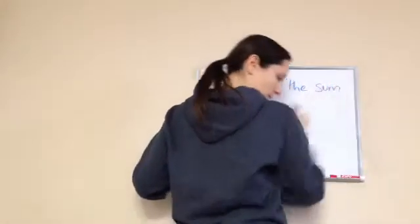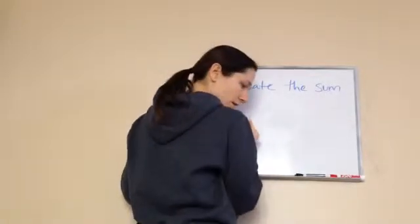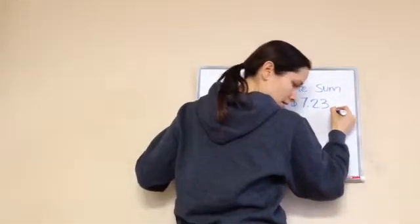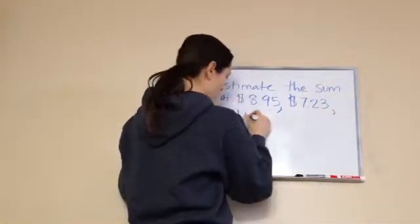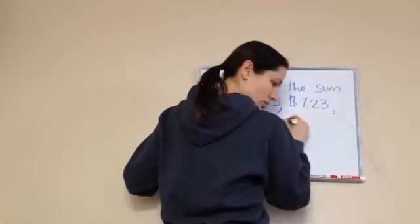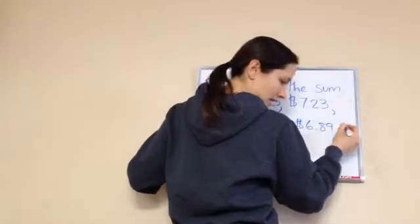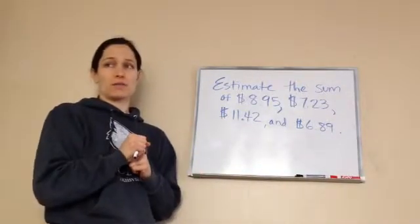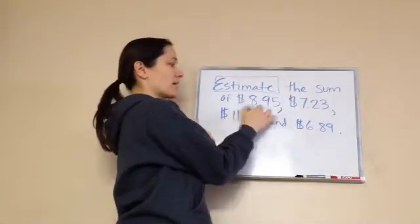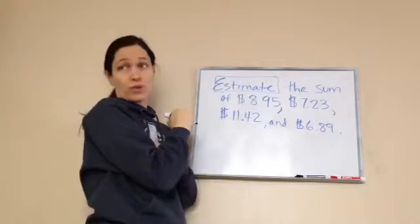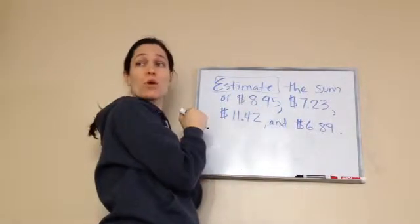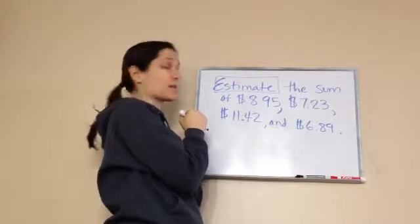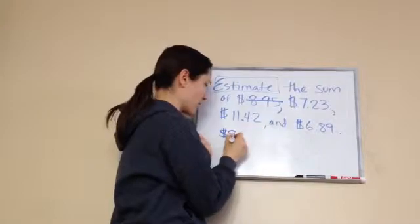The sum of $8.95, $7.23, $11.42, and $6.89. Now, here's what they say. By rounding to the nearest dollar before working it. So, our estimation here, because it's in dollar form, I think we're going to round it to the nearest dollar is what they want us to do. So, $8.95 is really what closest to the rounding to the nearest dollar? It would be $9.00. $9.00. Okay. So, I'm going to scratch that out and write down $9.00 here for that one.